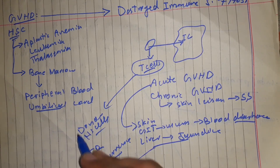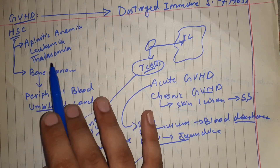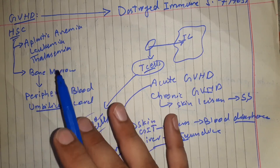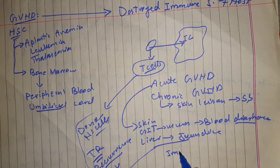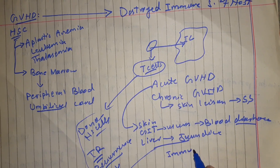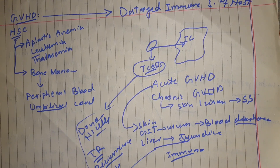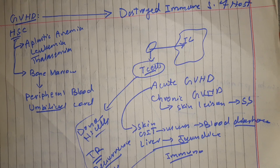Moreover, the patient who undergoes hematopoietic stem cell transplantation remains immunocompromised for a longer duration because their own immune system has been destroyed by radiation or chemotherapy, making them prone to many more infections. These are the two principal issues that arise in hematopoietic stem cell transplantation.